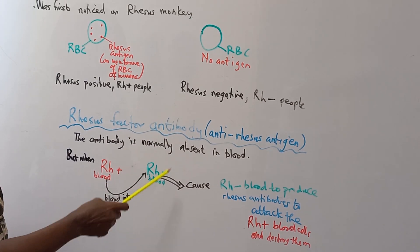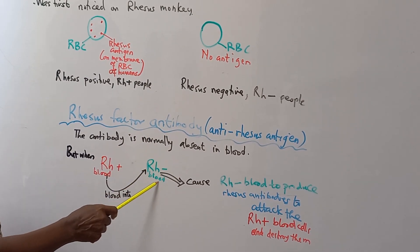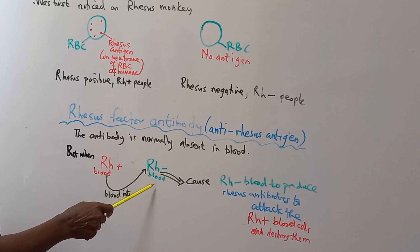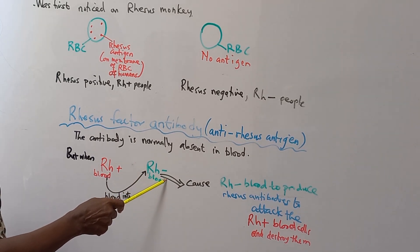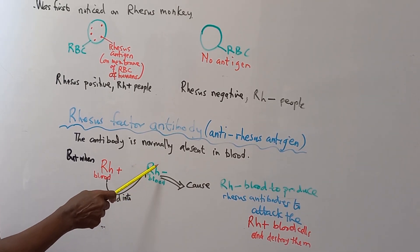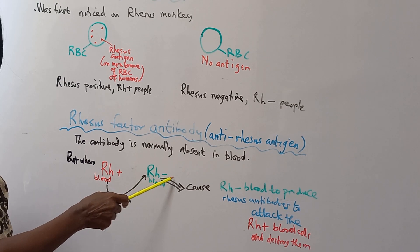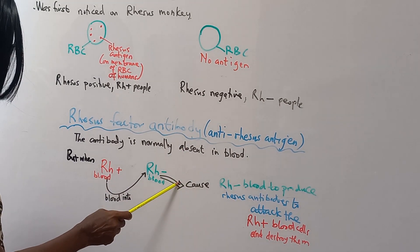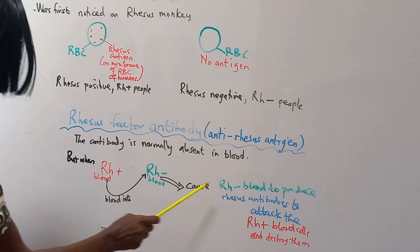So Rhesus antibodies are made only by Rhesus negative people, and they are made when Rhesus positive blood gets into them. So they make the antibodies to destroy the Rhesus positive blood cells.